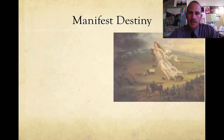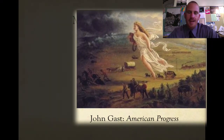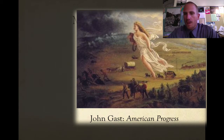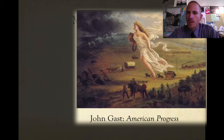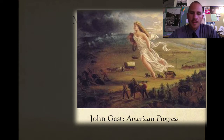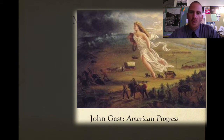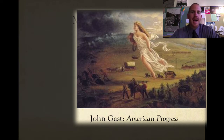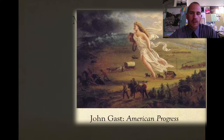Manifest Destiny — what is it? You can see this picture here by John Gast, 'American Progress.' Take a look at this for a second. We have Columbia right here in the center. On the right-hand side she's bringing the light to everything on the left. Think about a map of the United States — from right to left you're going from east to west. In the background there are early telegraph poles, and on the bottom left people are fleeing — maybe they're fleeing for a reason.